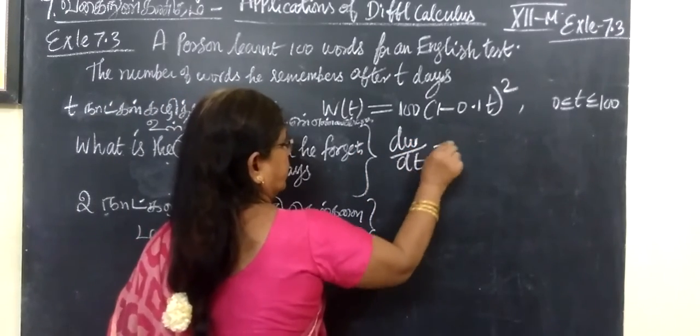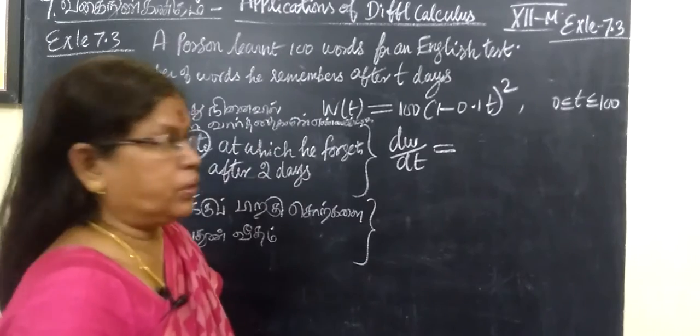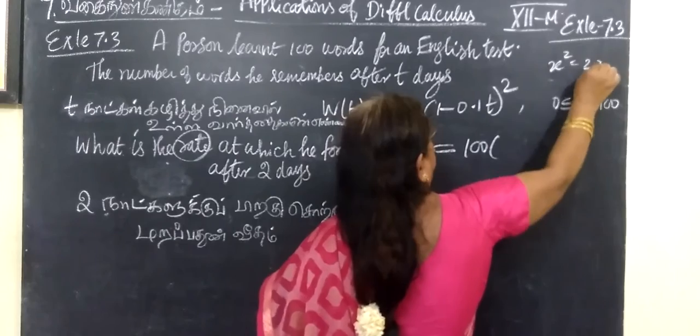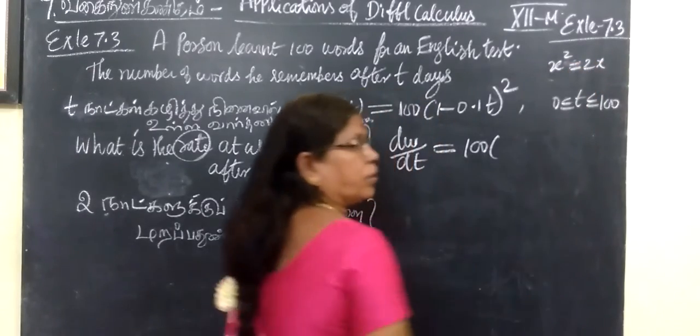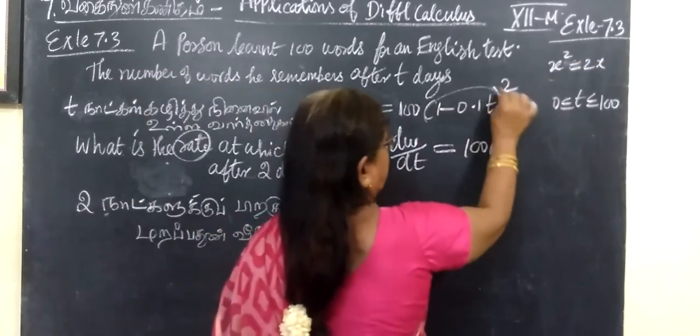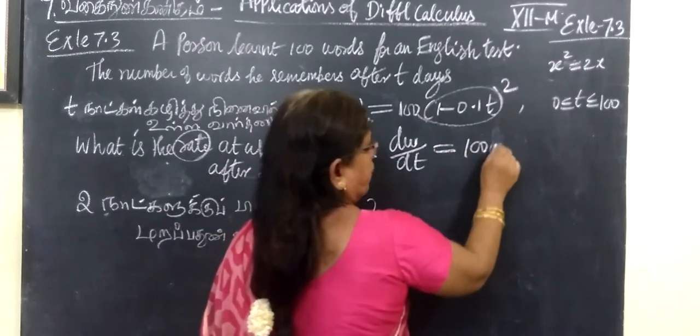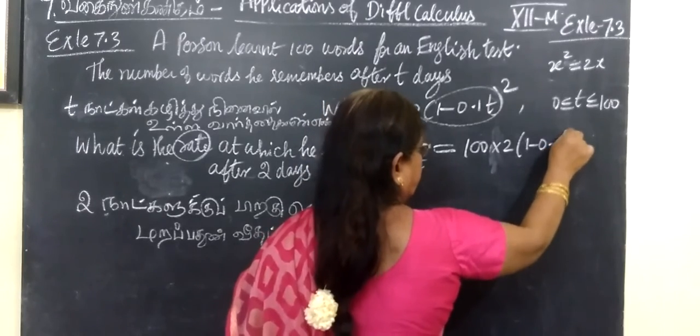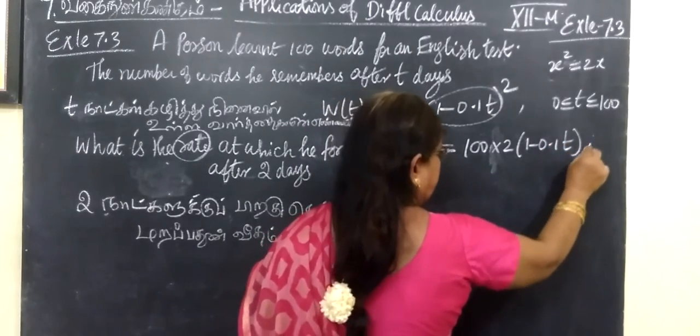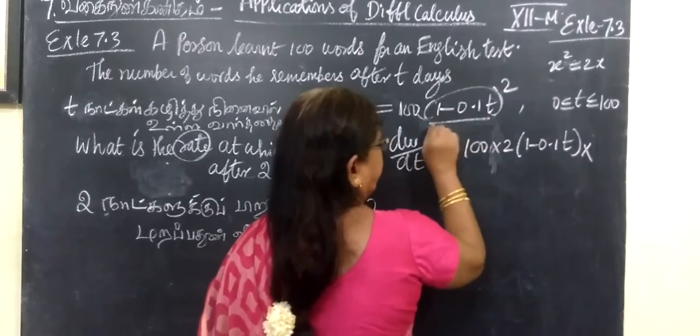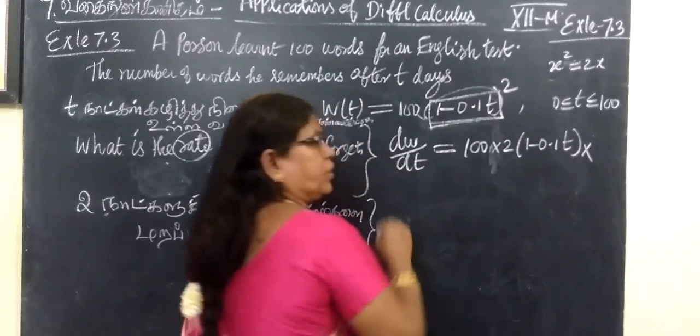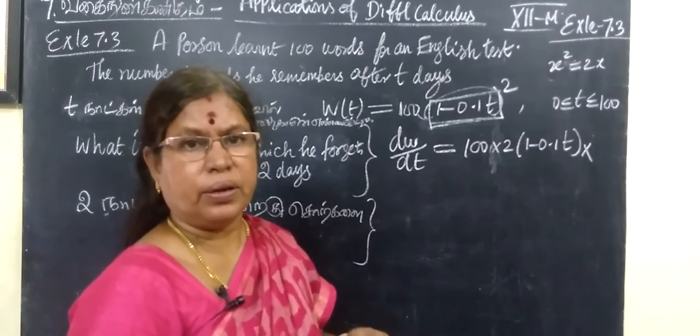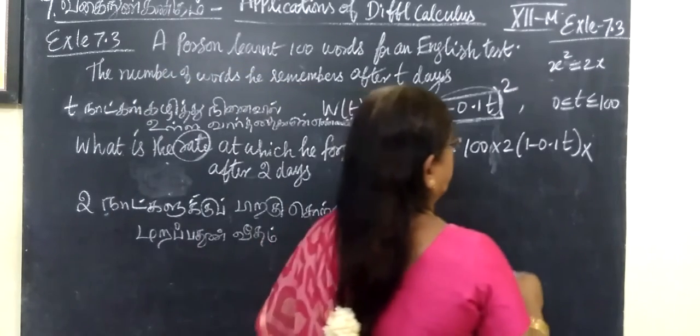So that is equal to 100. This is equal to 2. Differentiation is 2s. Now total, treating what is the rate at which, 2 brackets 1 minus 0.1, then t, into inner function brackets.